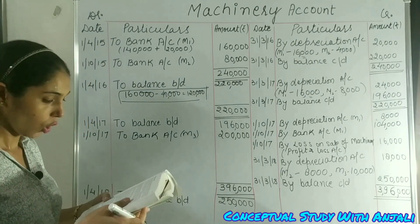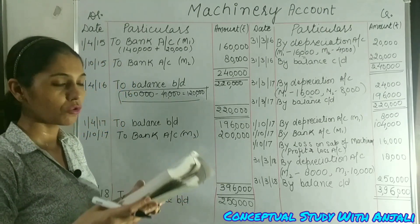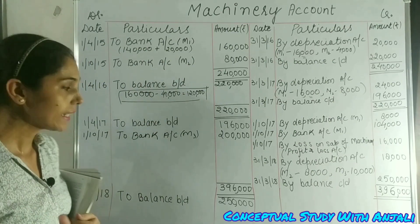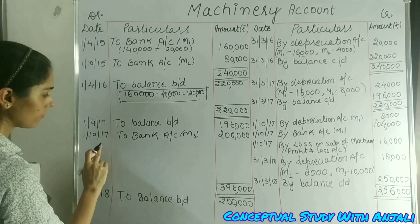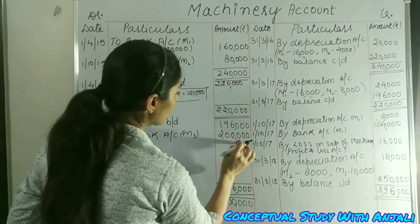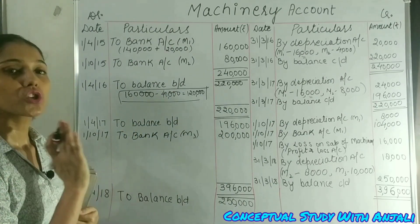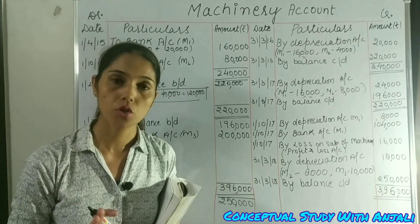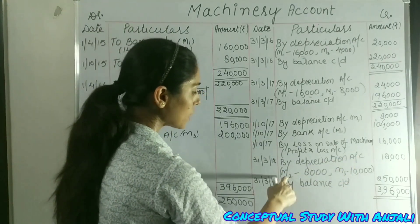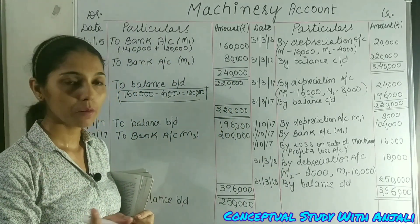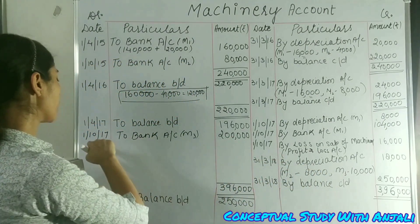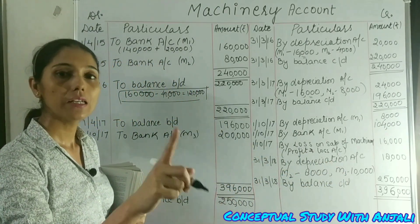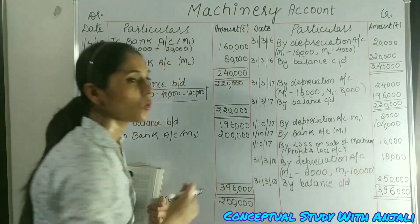On the same date, 1st October 2017, a new machine costing Rs. 2,00,000 was installed. CGST and SGST are not recorded in the machinery account. So we write: bank account M3 = Rs. 2,00,000. At year end 31st March 2018, we calculate depreciation: Machine 2 full year = Rs. 8,000, Machine 3 for 6 months = Rs. 10,000, total depreciation = Rs. 18,000.